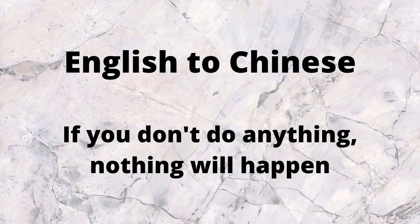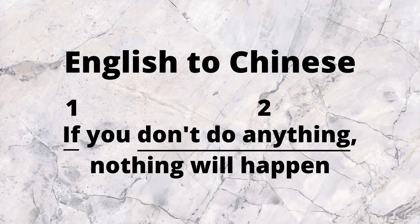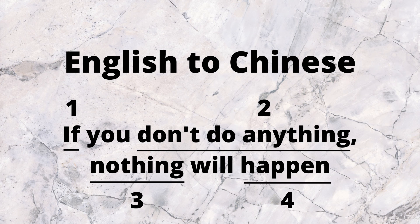If you don't do anything, nothing will happen. The key parts here will be knowing how to say: 1. if, 2. don't do anything, 3. nothing — which we'll see is actually the same pattern as 2 — and 4. to happen.